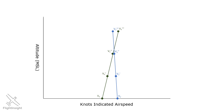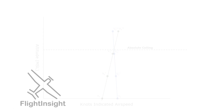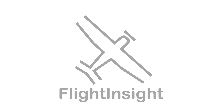The altitude where the indicated airspeed for VX and VY is the same is important — this is the absolute ceiling of our aircraft, where there's no excess power and the climb rate drops to zero. An aircraft's climb performance characteristics are very complex and involve a lot of aerodynamic principles. As pilots, we're most concerned with the concepts of best angle and rate of climb, when to use them, and what factors affect these speeds. This video stands as a good primer for this, and you can check out more training topics at our website, flight-insight.com.